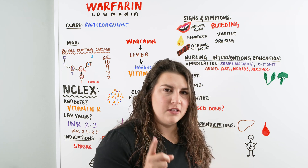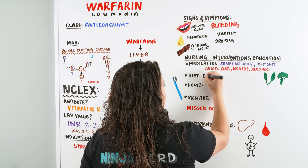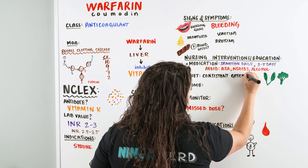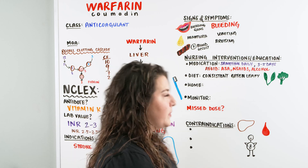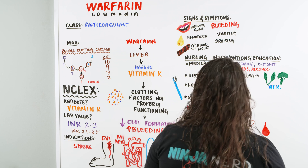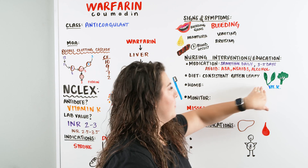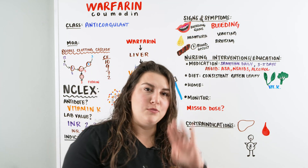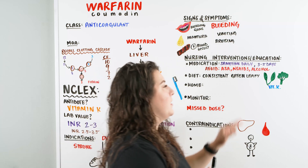Regarding diet, the NCLEX is tricky about how this is worded. The key is that green leafy vegetables need to be eaten consistently. Foods like spinach and broccoli contain vitamin K. Patients don't need to eliminate them — they need to be consistent. If they normally eat three salads a week, keep eating three salads a week. Changing intake from one salad one week to five the next fluctuates vitamin K levels, causing warfarin's effectiveness to fluctuate as well.